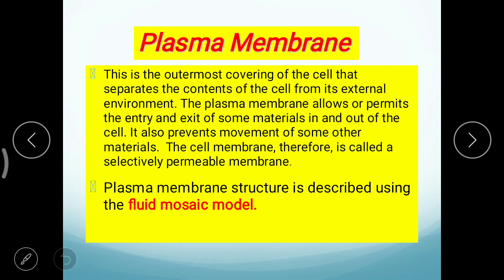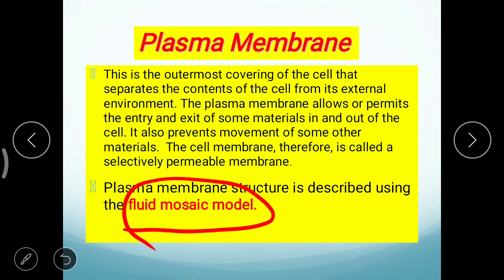Plasma membrane का structure कैसा होता है उसके बारे में भी बात करेंगे। इसे fluid mosaic model कहते हैं — तरल mosaic model। जैसे कि आपने tiles वाली चेसबोर्ड देखी होगी, ऐसे ही mosaic type में इसके ऊपर छोटे-छोटे ball-like structures होते हैं, इसलिए इसे mosaic model कहते हैं।